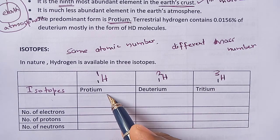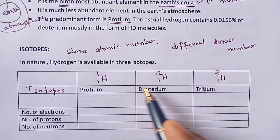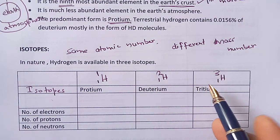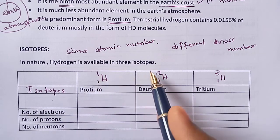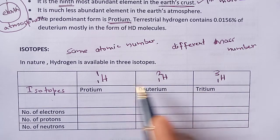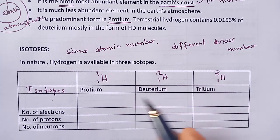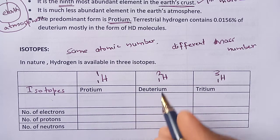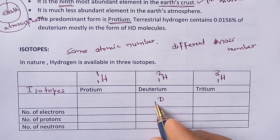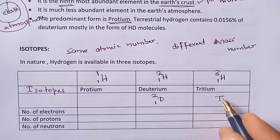Protium has mass number 1, deuterium has mass number 2, and tritium has mass number 3. All have the same atomic number, so they are isotopes. Deuterium is also indicated as D²₁ and tritium as T³₁.